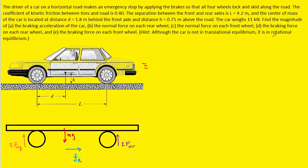The question tells us the car is in rotational equilibrium, meaning the net torque acting on the car equals zero. We select the center of mass as our pivot. Since the gravitational force passes through the pivot, it produces no torque and we can disregard mg for the torque calculation. We do need to consider the other forces.